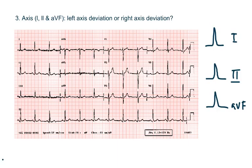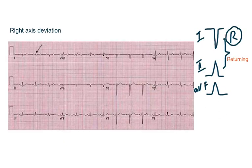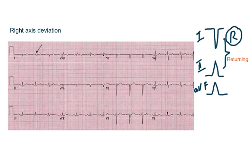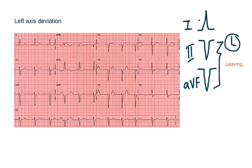The third step is to look at the axis — whether it's normal axis, left axis deviation, or right axis deviation. The leads you have to look at are leads 1, 2, and AVF. If the QRS complex is positive in lead 1, 2, and AVF — that is all are upgoing — then it is a normal axis. If the QRS complex is downward, negative in lead 1, whereas in 2 and AVF they are upgoing, that is 2 and AVF are returning to lead 1, then it is right axis deviation. In left axis deviation, the QRS is positive in lead 1, whereas in lead 2 and AVF it's negative — like 2 and AVF are leaving lead 1. So that is left axis deviation.